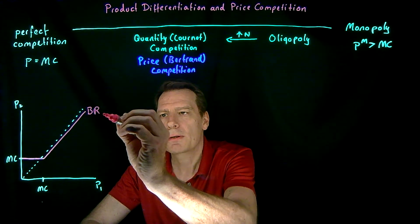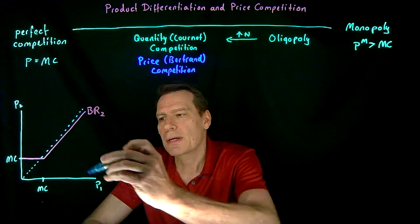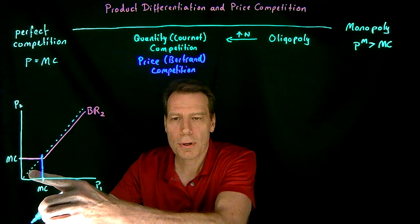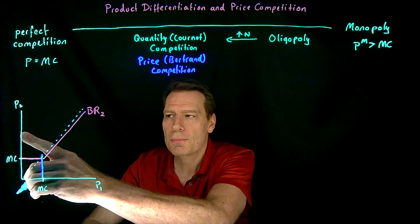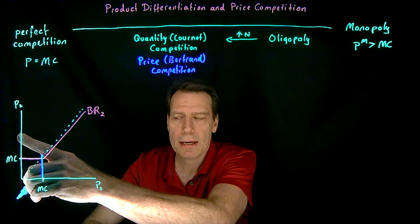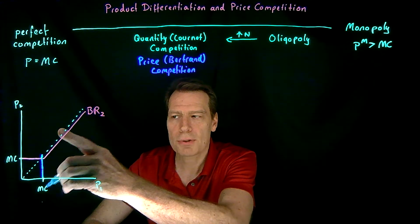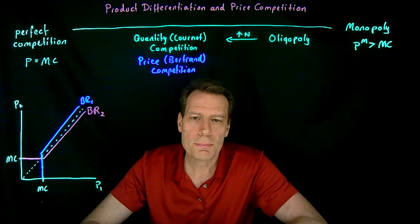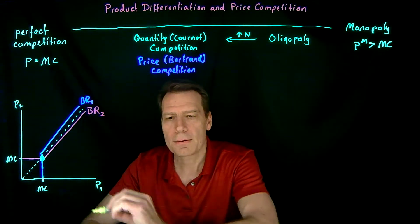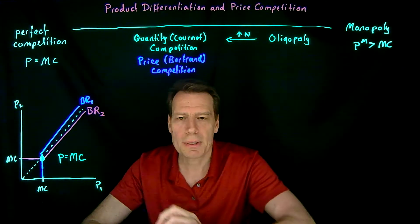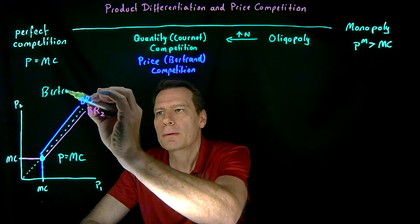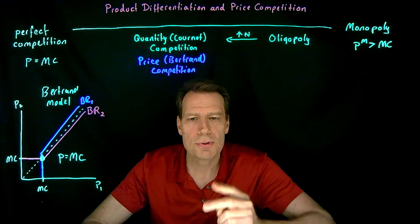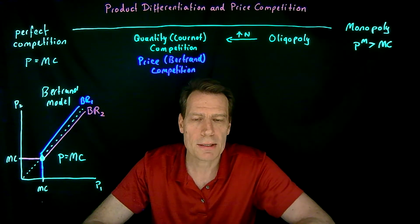If firm two matched the price it would end up on the 45-degree line; if it underbids it ends up just below. So for any price above marginal cost, firm two wants to price just below firm one, giving us the best response function for firm two. Similarly, firm one's best response function says: price at marginal cost if firm two prices below marginal cost, and underbid otherwise. The two best response functions intersect where price equals marginal cost — and that becomes the equilibrium in the Bertrand model. Price competition is so fierce that with just two firms, we end up at the competitive outcome.